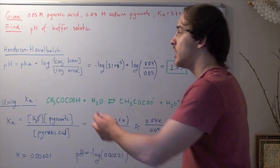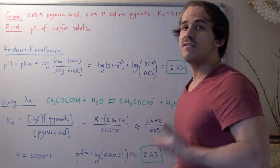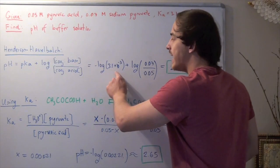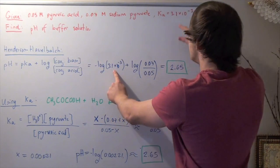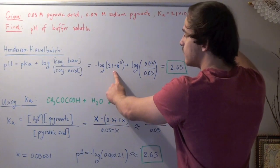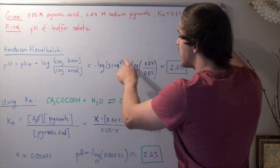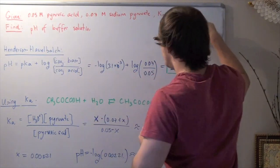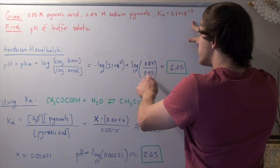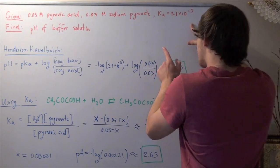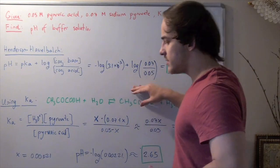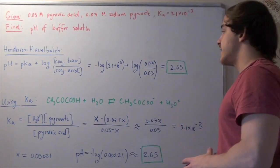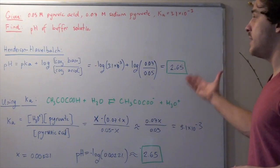Remember, pKa is simply negative log of Ka. So this equals negative log of 3.1 times 10 to the negative 3, plus log of 0.07 over 0.05. We plug this into our calculator and get approximately 2.65. So that's our pH.